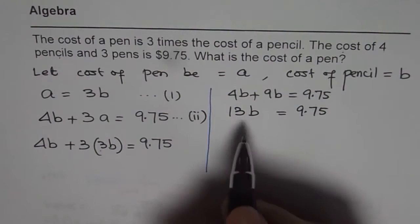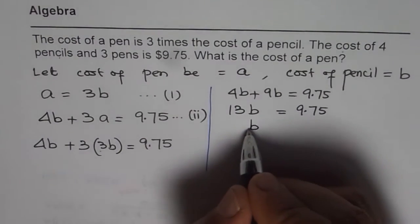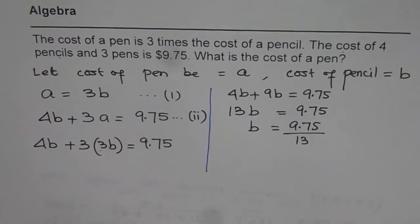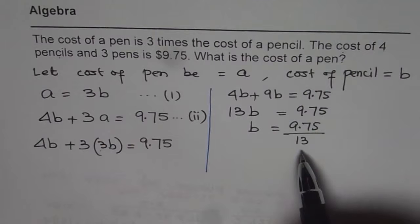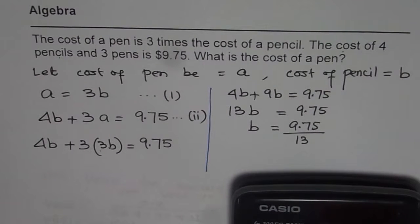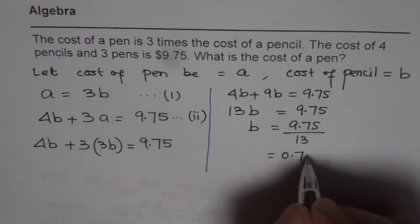What is B equals to? We have to divide both sides by 13 to get the answer for B. So B equals to 9.75 divided by 13. So that should give you the cost of pencil. So we can use our calculator. Let me get one. So we have 9.75 divided by 13, which is 0.75. So we get B as 0.75.